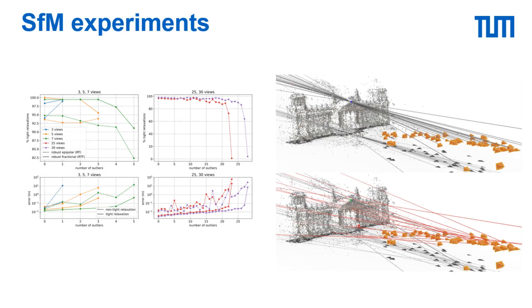We also validate our method on more realistic scenarios by taking a high quality structure from motion reconstruction and generating triangulation problems by selecting a subset of views and adding outliers by replacing matched points with random key points in the image.